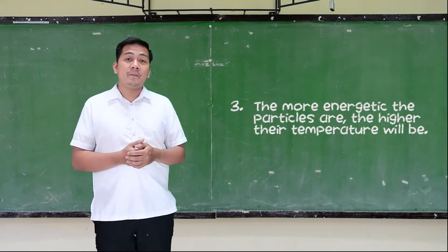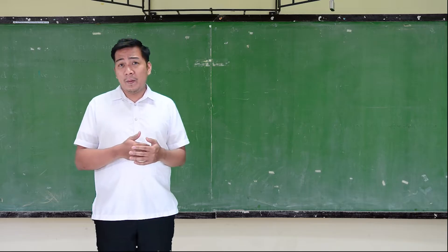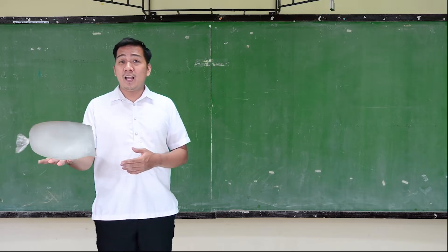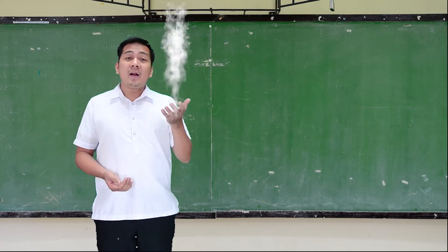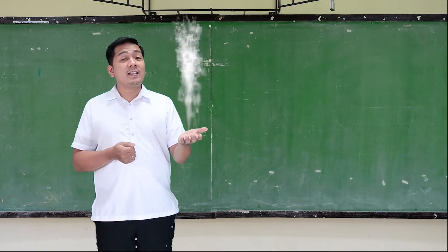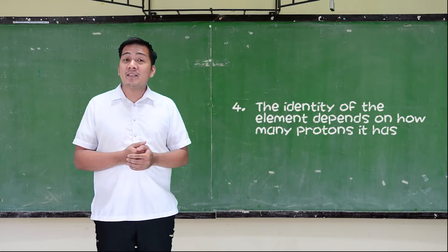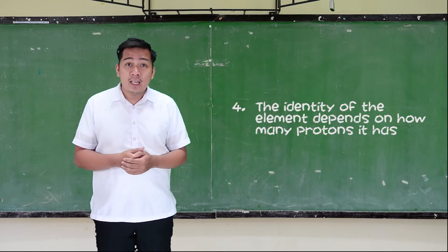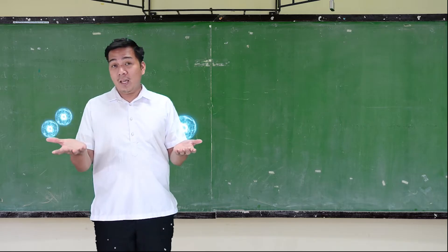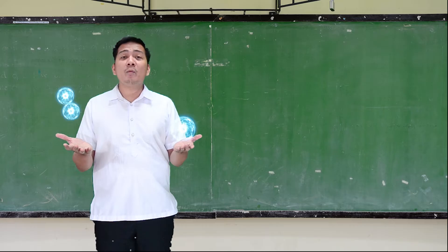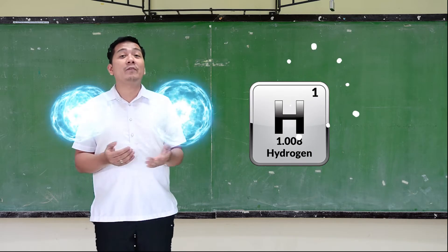Concept number three: The more energetic the particles are, the higher the temperature will be. So alin ang mas energetic — ang mga particles ng yelo o particles ng tubig? Ang particles ng tubig ay mas energetic because it is hotter. Concept number four: The identity of an element depends on how many protons it has. Kung ang element ay may isang proton, ibig sabihin siya ay hydrogen. Kung may dalawang protons, helium. It doesn't matter how many neutrons they have — just count the number of protons and you will be able to know what type of element it is.